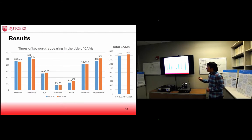Revenue, inventory, and accounts receivable are top three accounting items shown in the title of CAM disclosures in these two years of auditors reports.